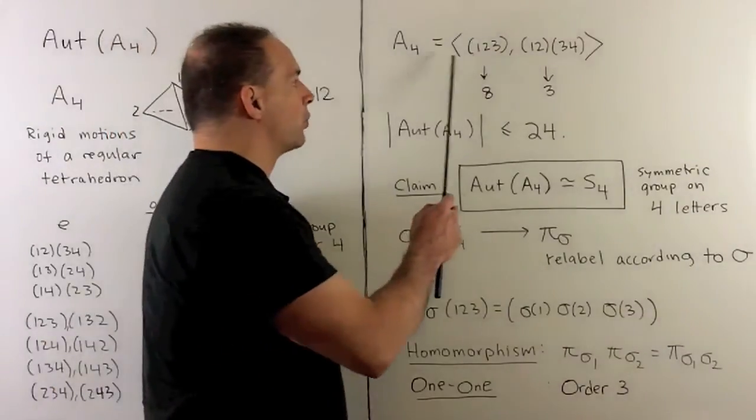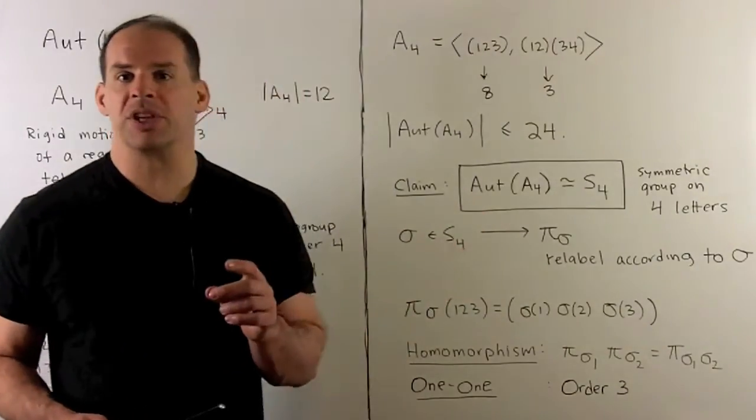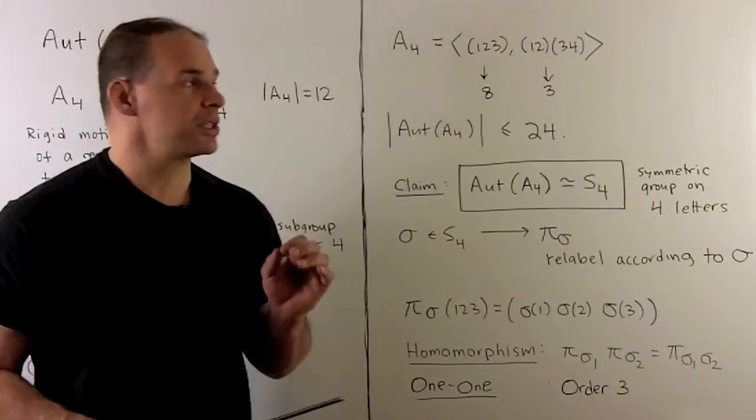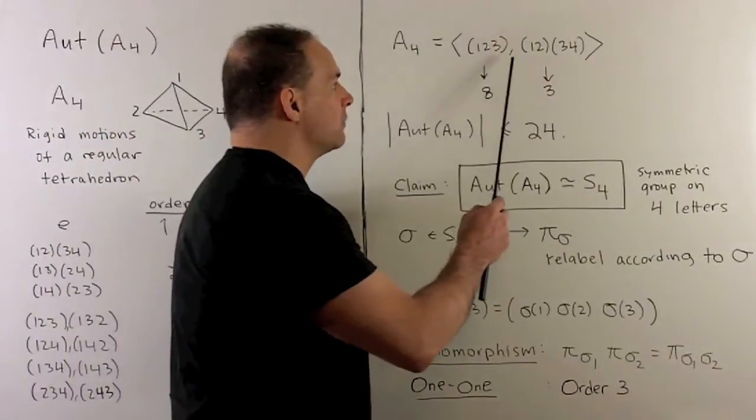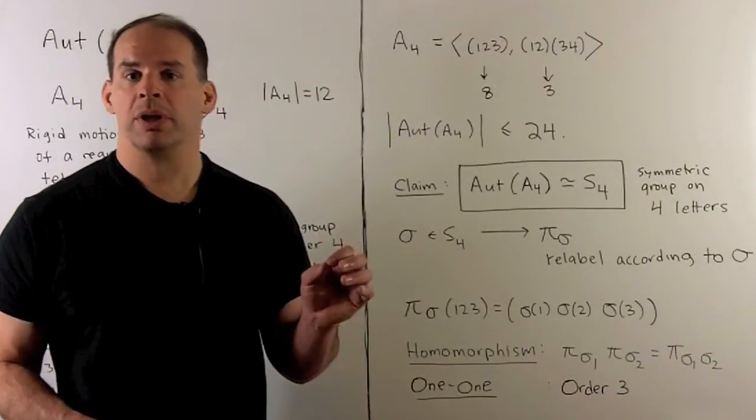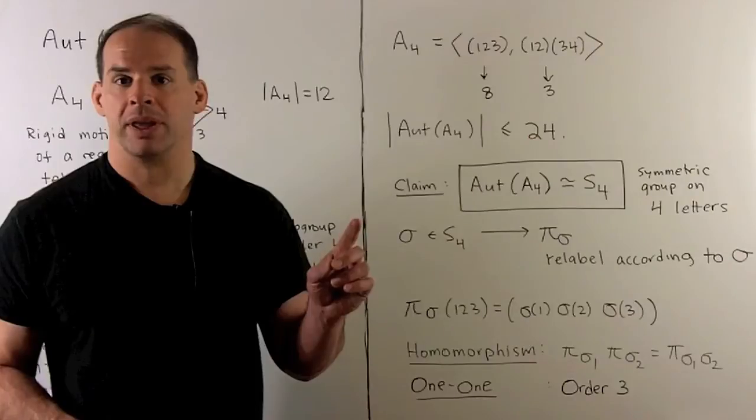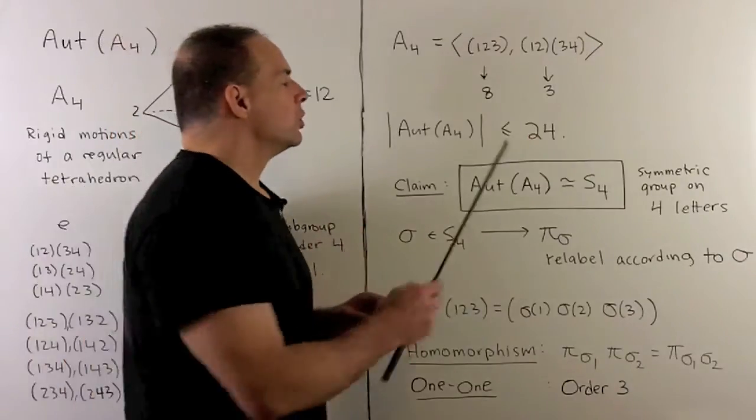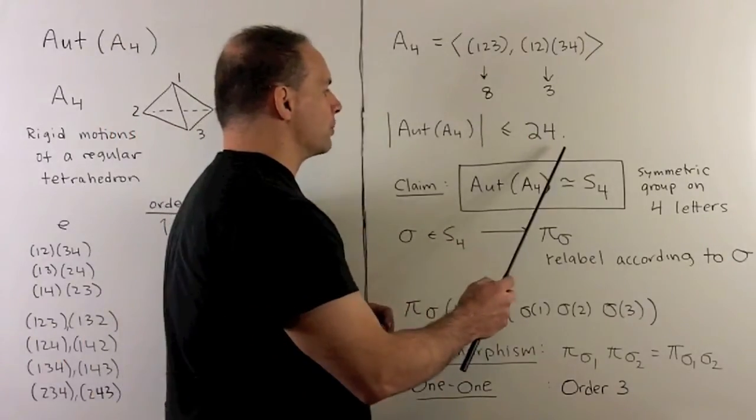This three cycle has to be carried to another three cycle, so we have eight choices. This product of disjoint two cycles has to be carried to another product of disjoint two cycles, so we have three choices. That means we have at most 24 automorphisms.